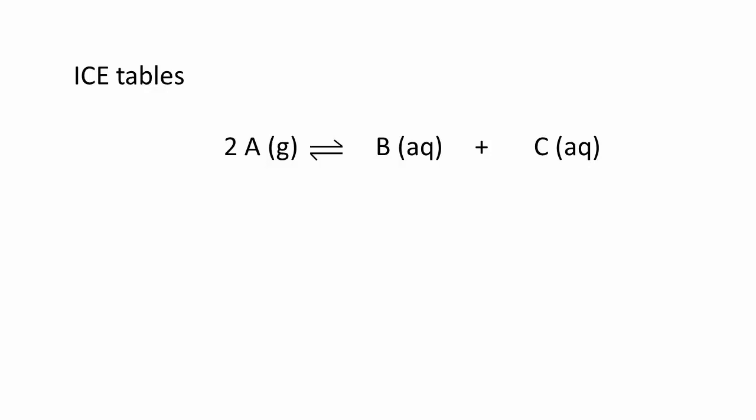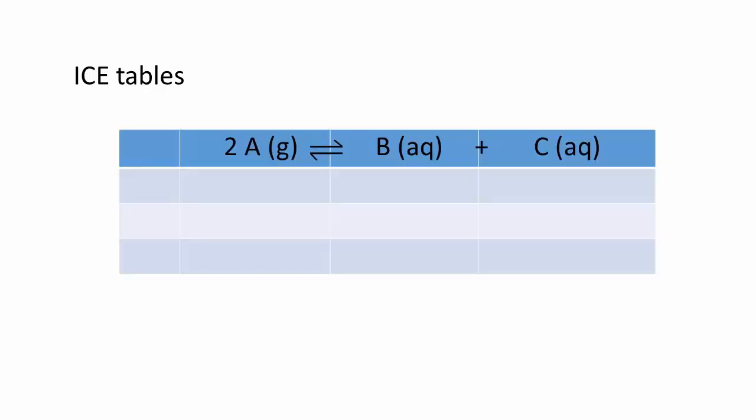At first glance, we have multiple unknowns. However, we really only have one unknown, and that is how far the reaction goes towards the products or back towards the reactants. We solve the problem by constructing an ICE table.